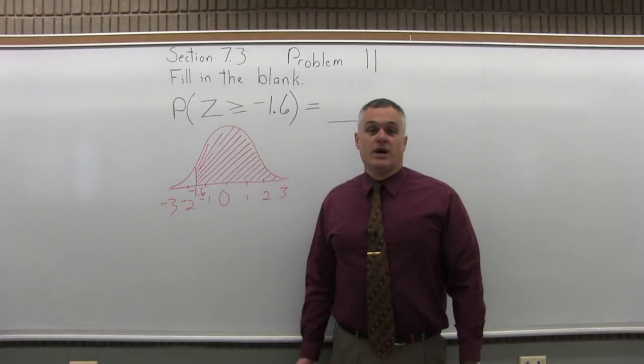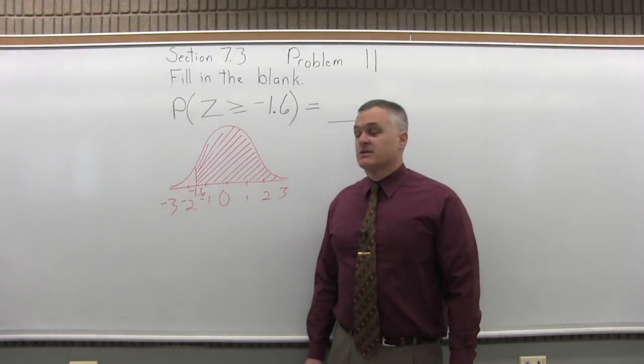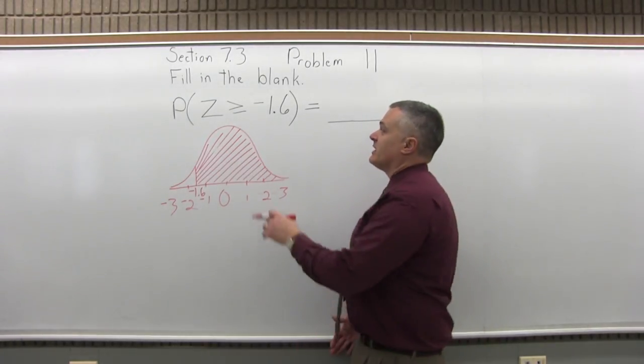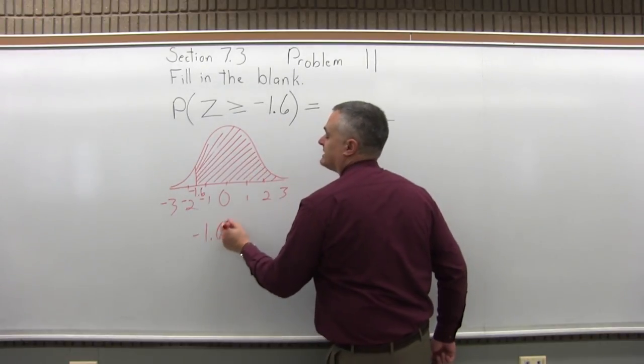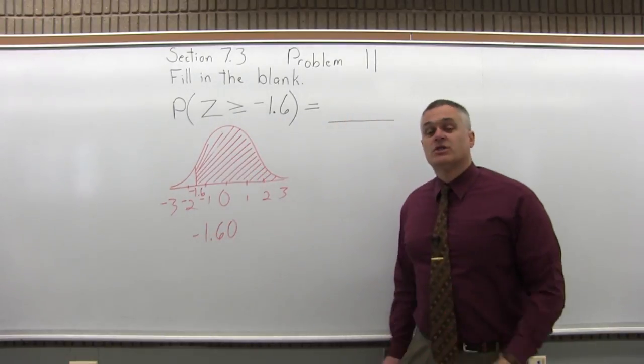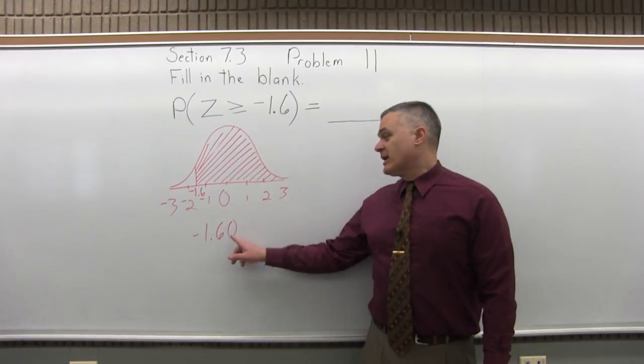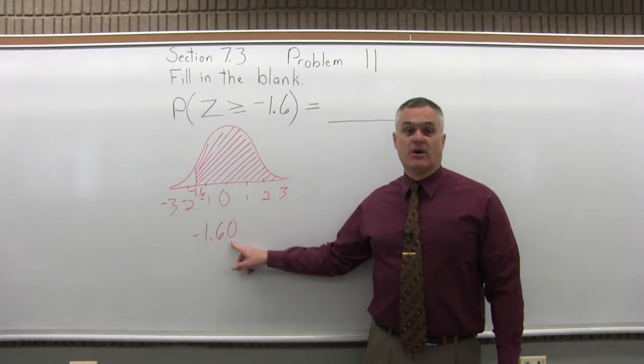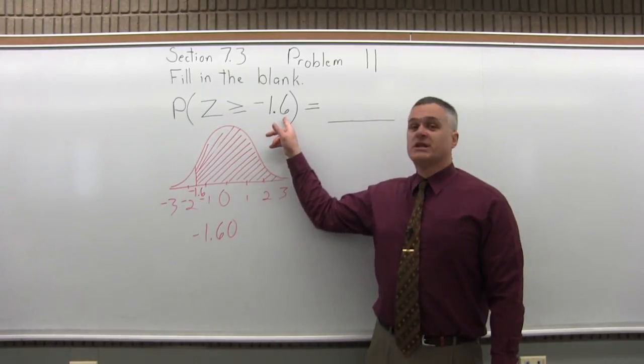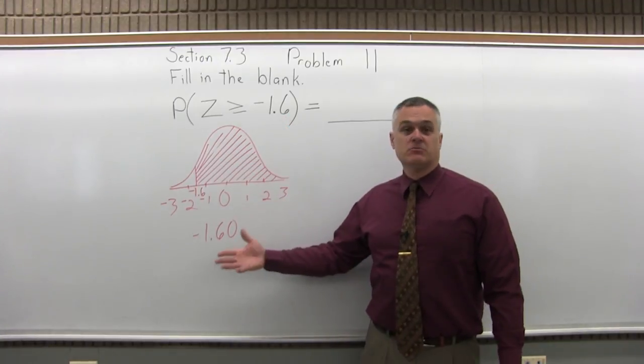So let's start by looking up negative 1.6. Step one to look up any value in the chart is write the number to look up so that it has two places after the decimal. So that negative 1.6, I will write as negative 1.60. The way it's written, it only has one place after the decimal. So I fill in a zero. Now it has two places.